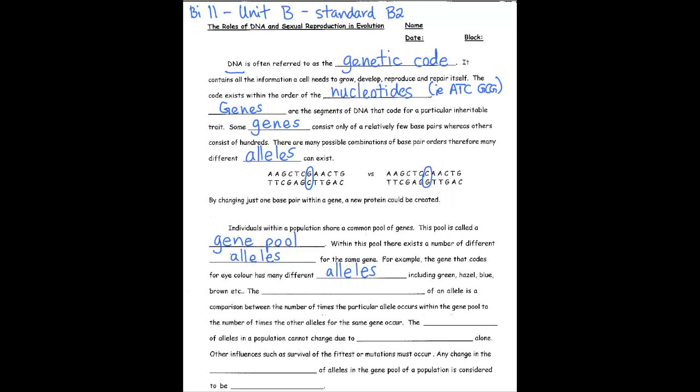The relative frequency of an allele in a pool is in comparison between the number of times the particular allele occurs within a gene pool to the number of times the other alleles for the same gene occur.